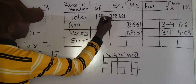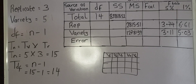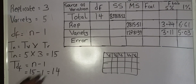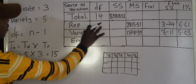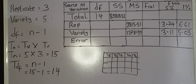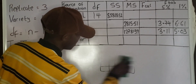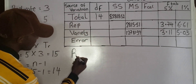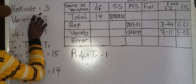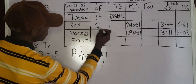Now let's get the degree of freedom for replicate. The replicate degree of freedom, RDF, is equal to the total number of replicates minus 1, that is TR − 1. We have 3 replicates, so RDF = 3 − 1 = 2.